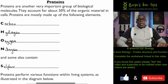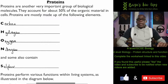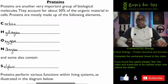On the first page: proteins are another very important group of biological molecules. Previously we looked at lipids and carbohydrates. Proteins account for about 50% of the organic material in cells and are mainly made up of carbon, hydrogen, oxygen, and nitrogen. Some also contain sulfur. As well as those five elements, various other elements can be found in different proteins which enable them to carry out their functions.